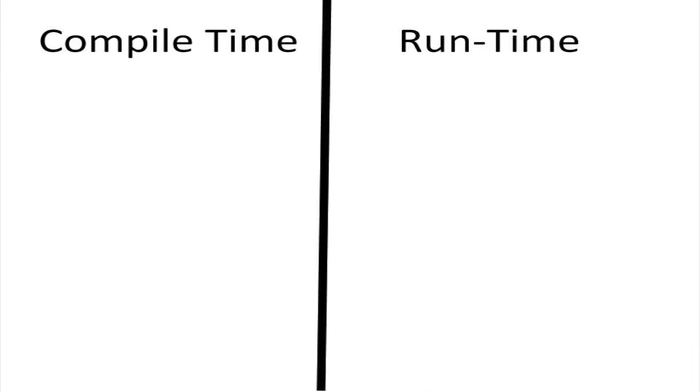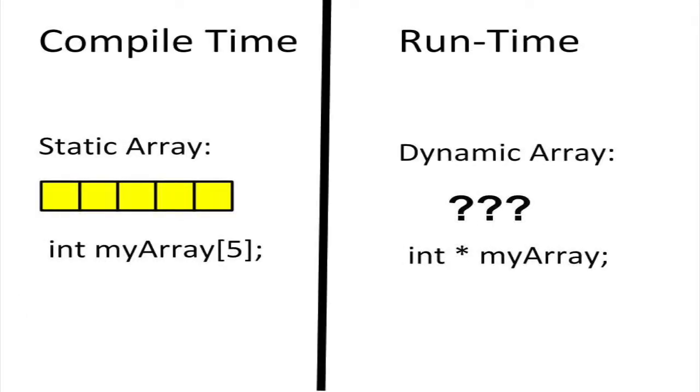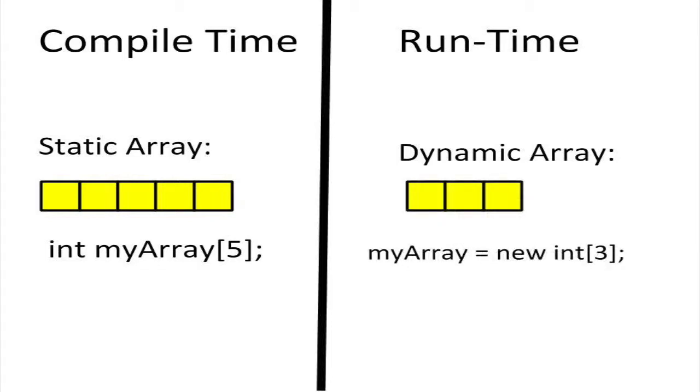When we create an ordinary static array, we have to specify the length at compile time, or by compile time. With a dynamic array, we can specify the array length at runtime.